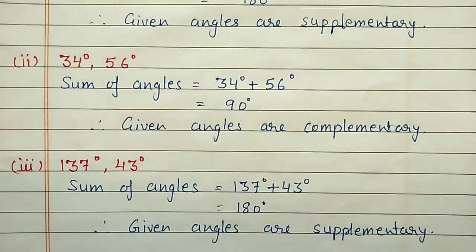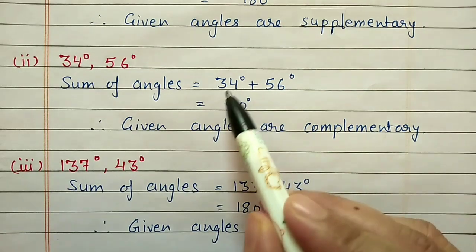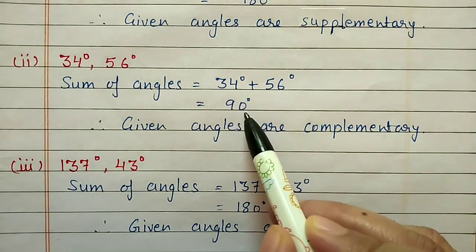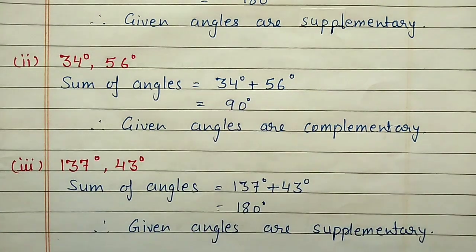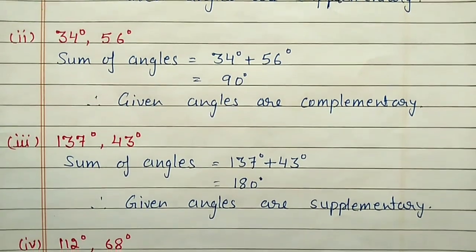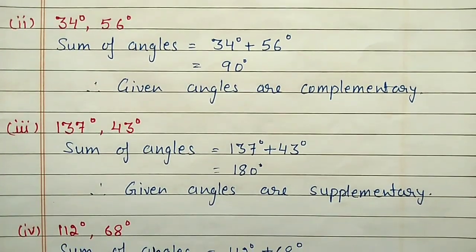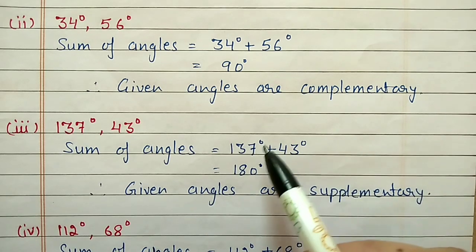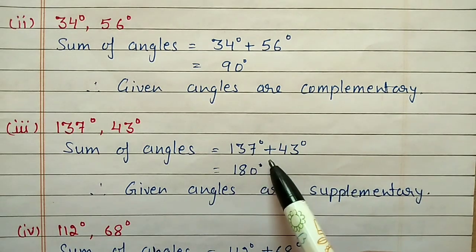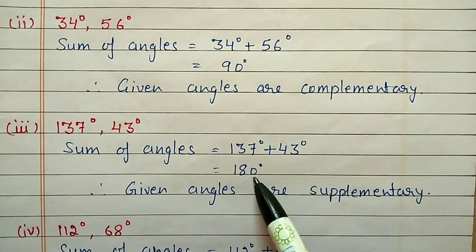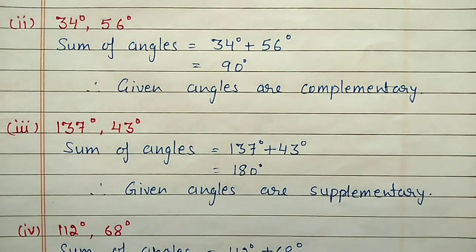Second part: 34 degrees and 56 degrees. After adding 34 and 56, we get 90 degrees, so they are complementary angles. Third part: 137 and 43 degrees. 137 plus 43 gives 180 degrees, so they are supplementary angles. Fourth part: 112 degrees and 68 degrees. 112 plus 68 gives 180 degrees, so they are supplementary angles.